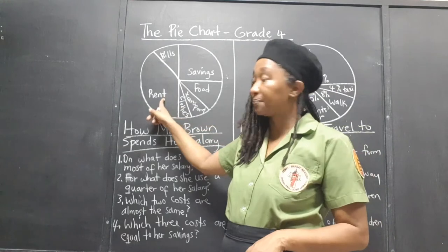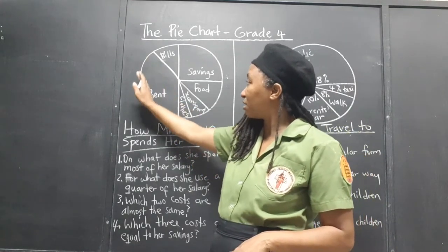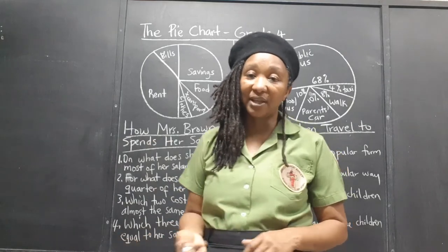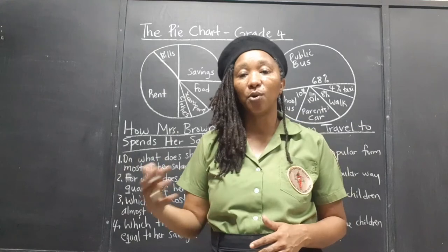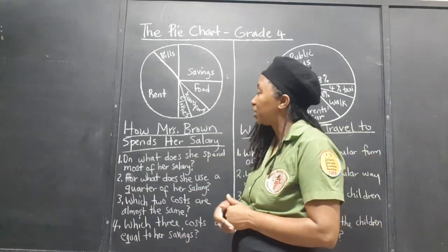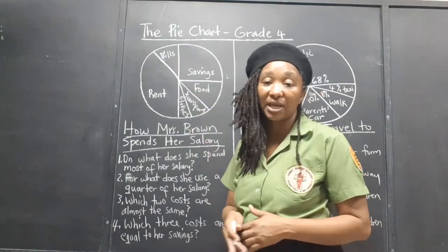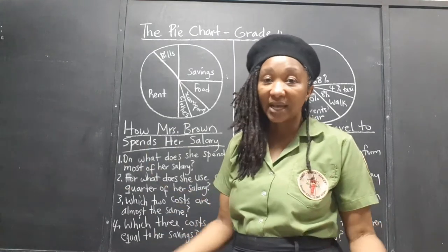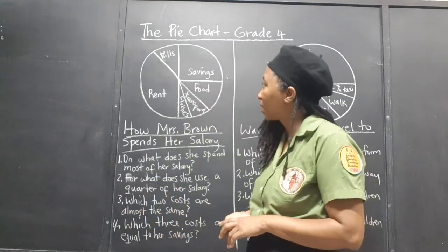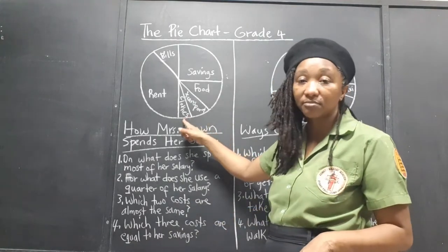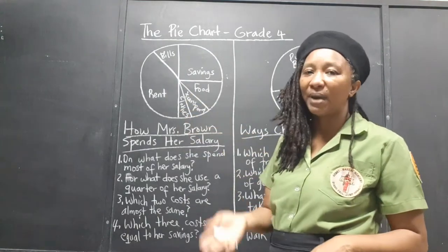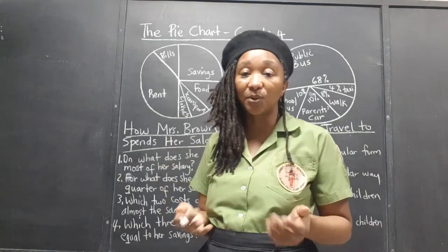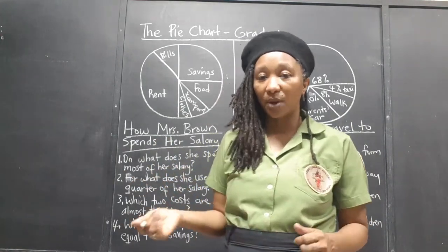Mrs. Brown wants to make sure all the important things she has to do for the month can be done using her salary. She knows her rent takes up a big chunk — rent is the money you pay to the person who owns the house you live in. She also has other bills to pay: her electric bill, water bill, telephone bill, cable bill, gas bill. Then she buys clothes, though not much is spent on clothes since she wouldn't be buying them every month. She puts aside a little each month until she needs clothes, then uses that clothing fund.